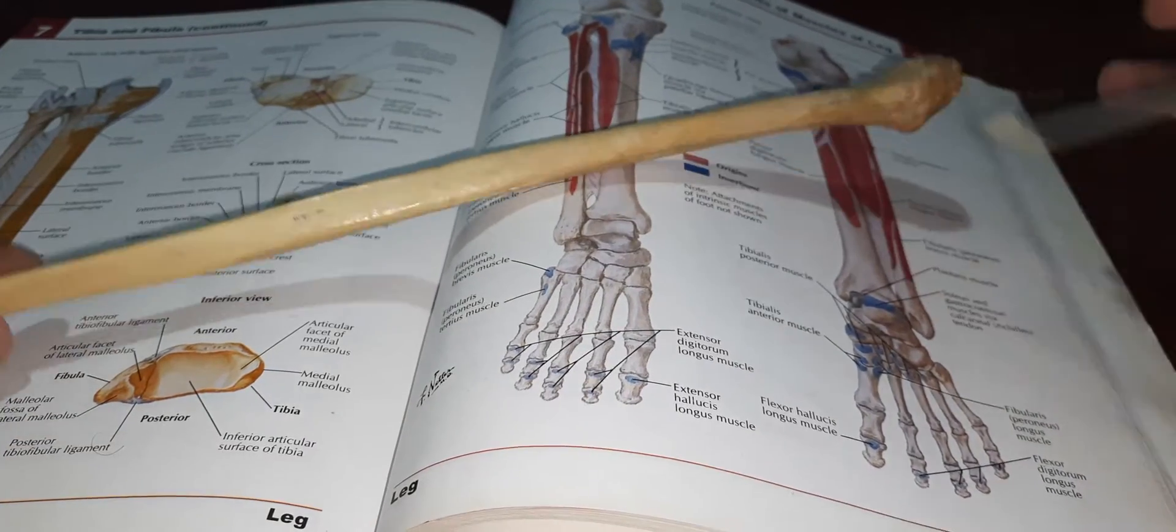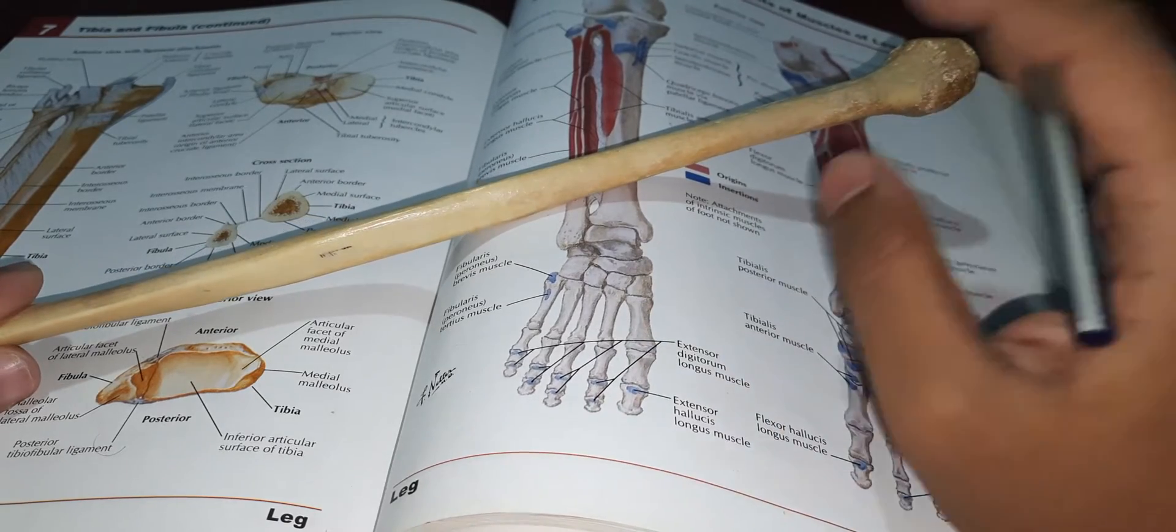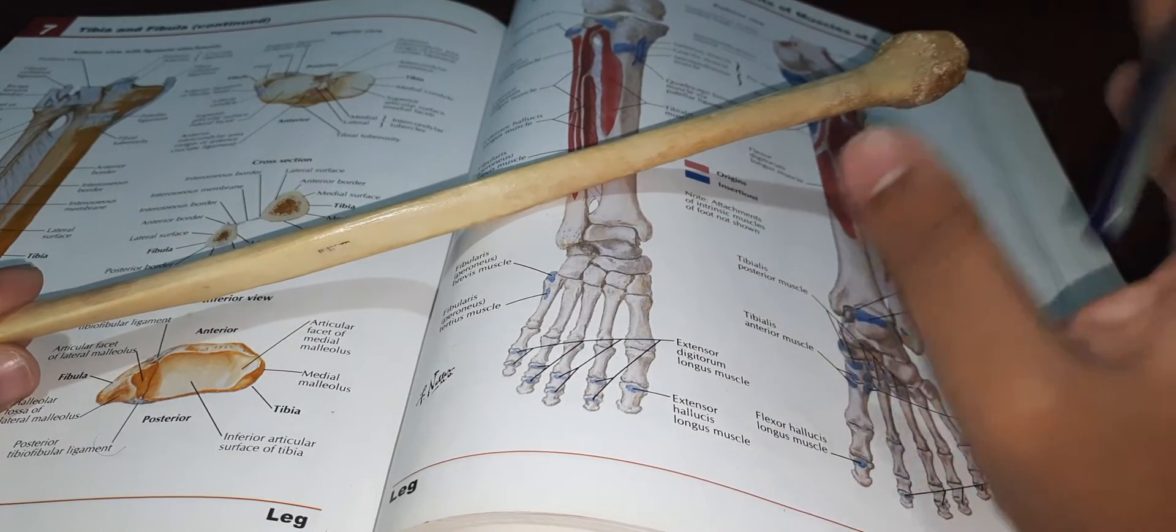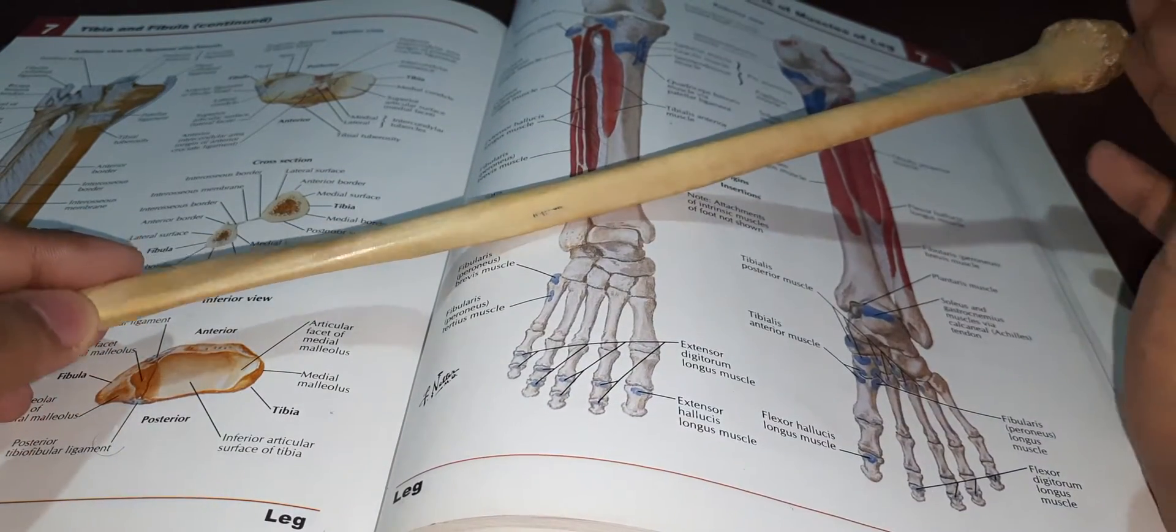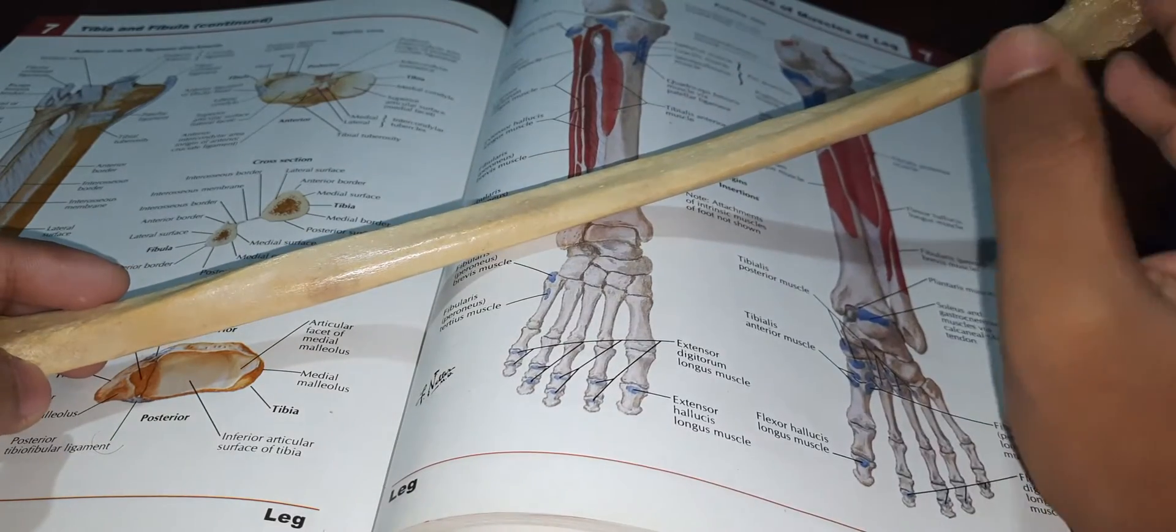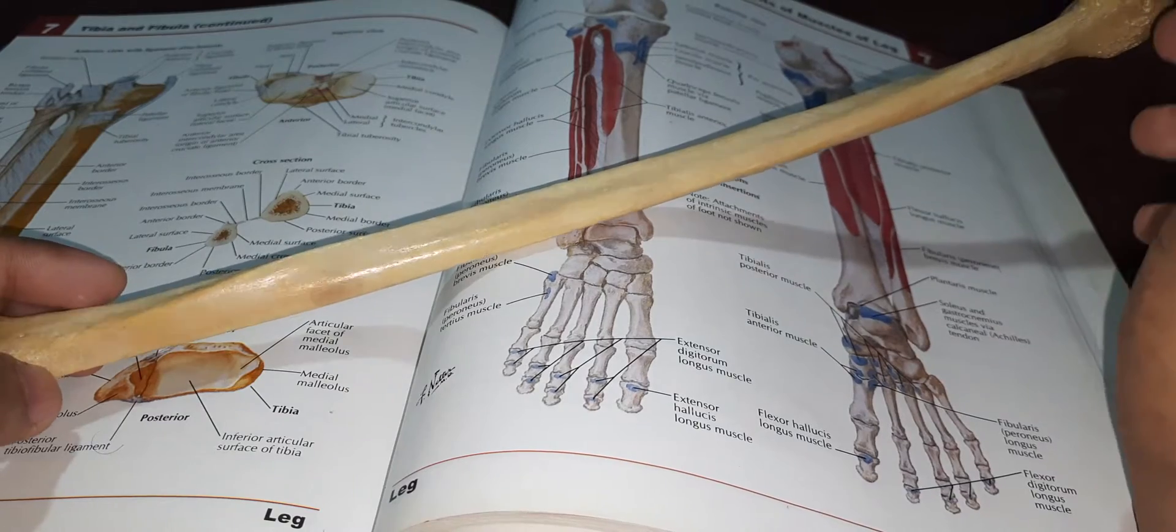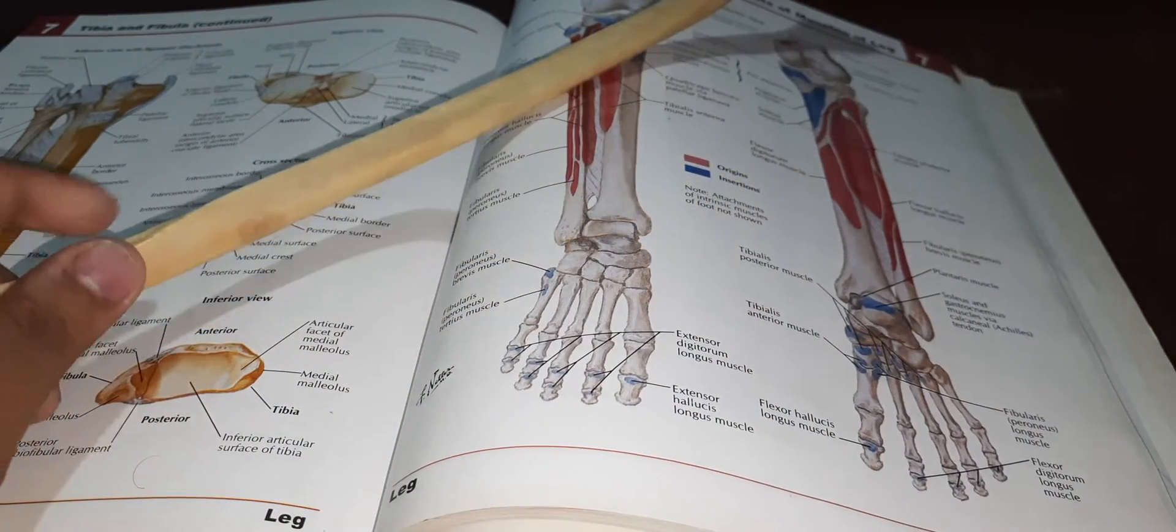Assalamualaikum, this is Fibula. Fibula is one of the basic bones that we have done in the anatomy course. The surface borders, lower end, gross features, side determination, anatomical points - the Fibula is extremely critical. This is an easy way to apply in this video.